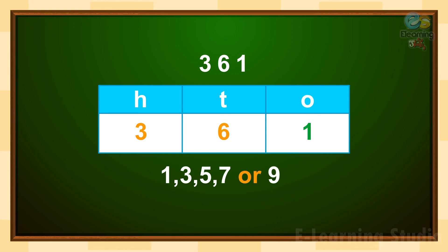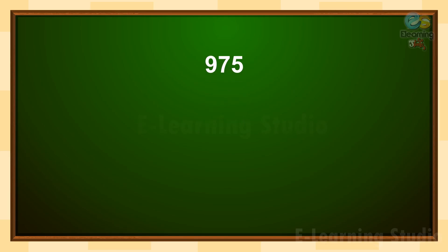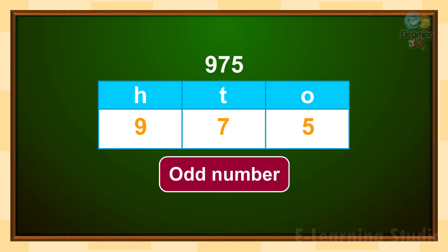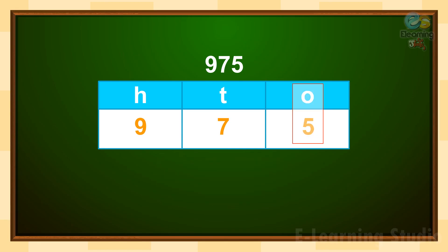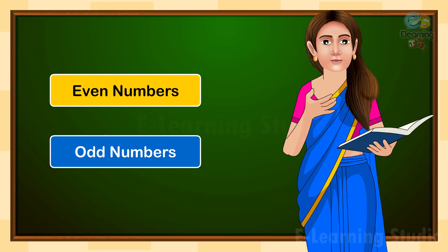According to the rule, if a number has 1, 3, 5, 7, or 9 in the ones place, it's considered an odd number. Children, in the number 975, can you tell me — is this even or odd? Yes, this is an odd number, because its ones place digit is 5. According to our rule, if a number has 1, 3, 5, 7, or 9 in the ones place, that number is considered an odd number.